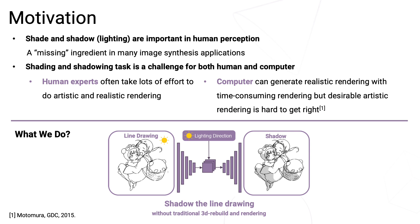The goal of this paper is to shadow the given 2D line drawings automatically. The network builds 3D information in latent space. The output of our network is just the pure shadow, which can be edited by the artists, giving them a good starting point or a hint to shadow their art.